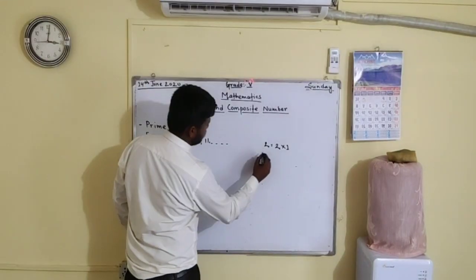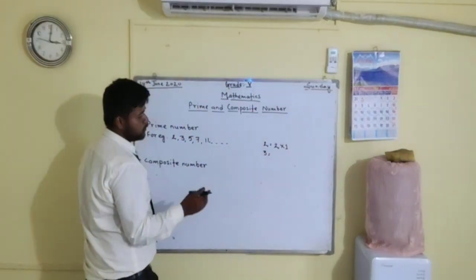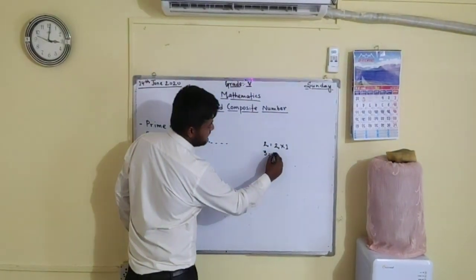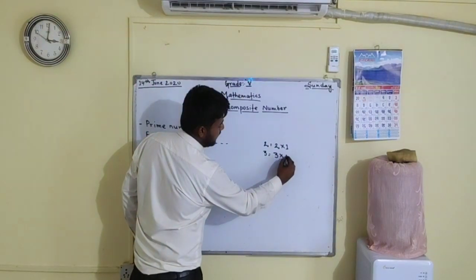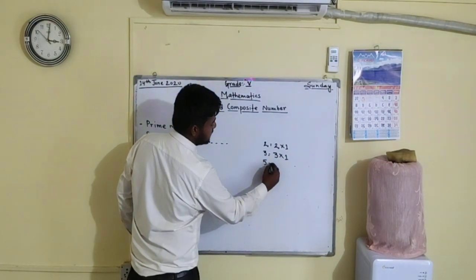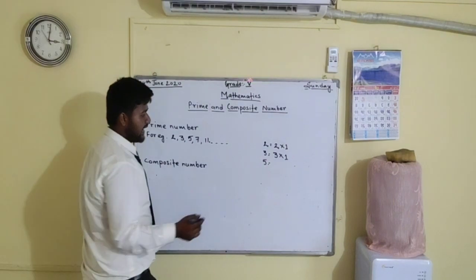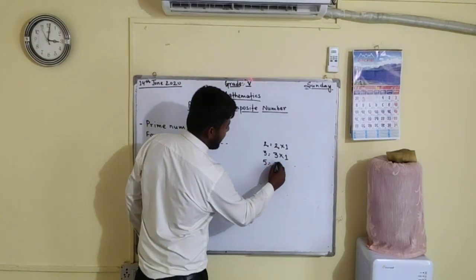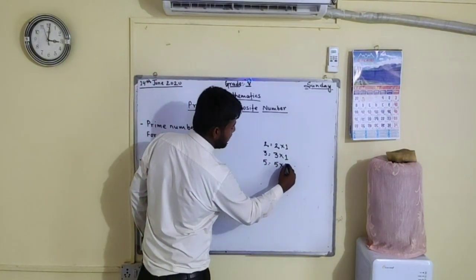Now 3 — 3 has also got only two factors, that is 3 and 1. And 5 — 5 has also got only two factors, that is 5 and 1.